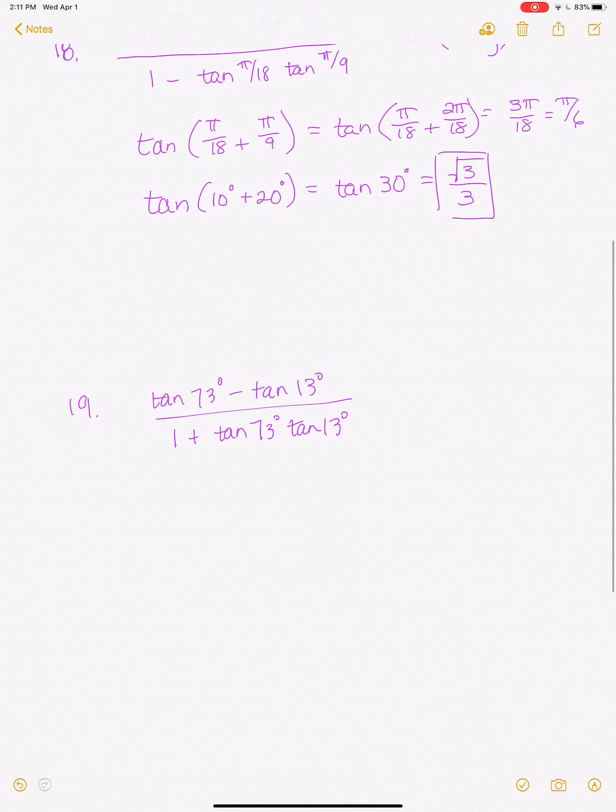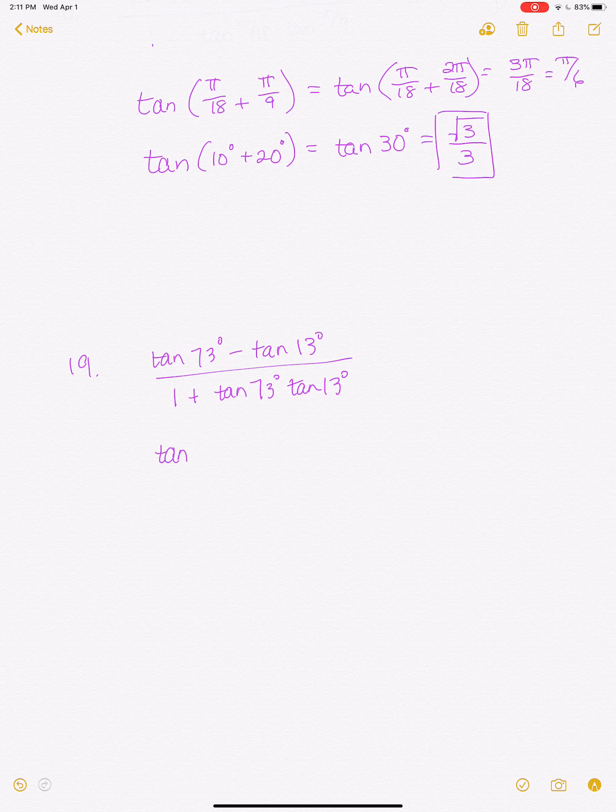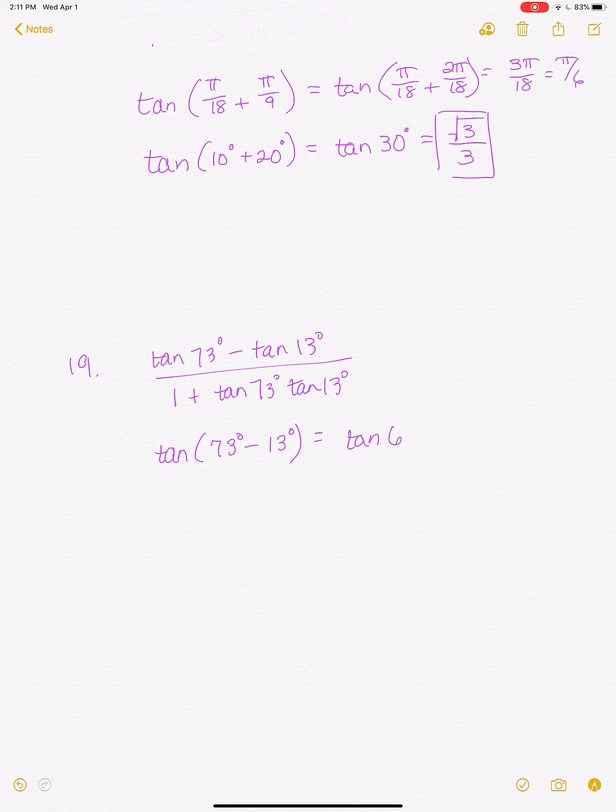Alright, and then one more. So this is still tangent. This is the subtraction formula. So this is going to be the tangent of 73 degrees minus 13. And that's going to be the tangent of 60 degrees, which is the square root of 3.